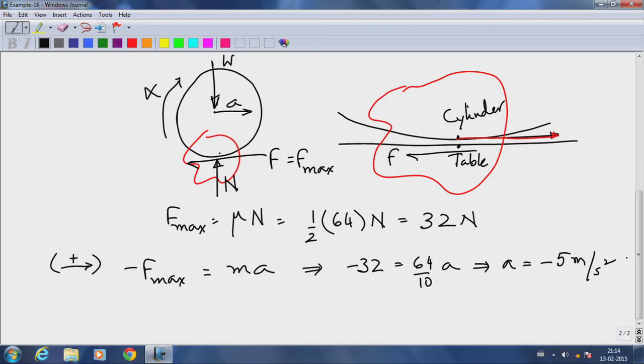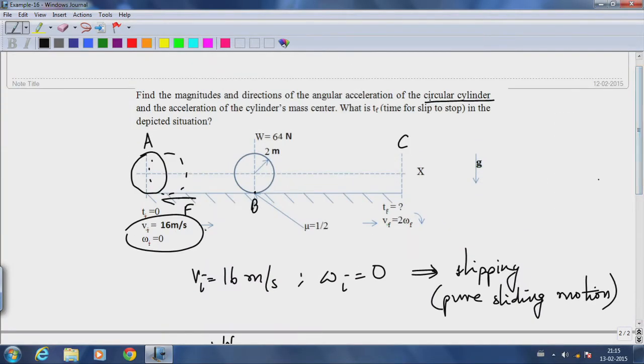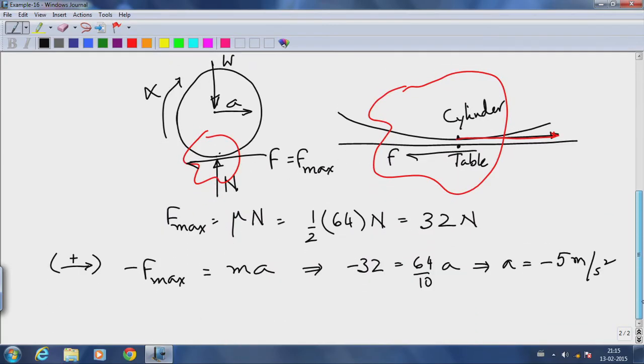I chose the acceleration to point to my right, but the value came out to be minus 5. That means the cylinder is actually decelerating. Remember the velocity is plus 16 to start with, so the velocity is plus 16 to the right and the acceleration is to the left, which means it is going to be decelerating.